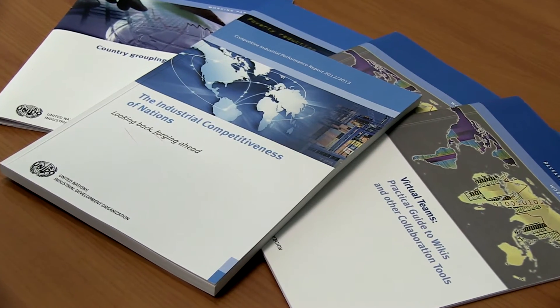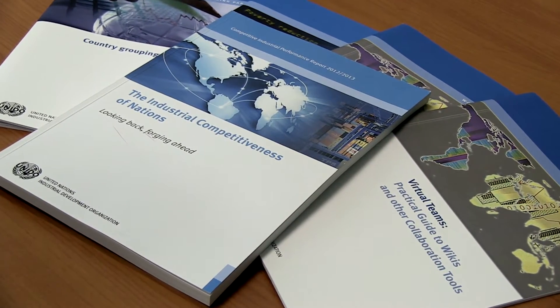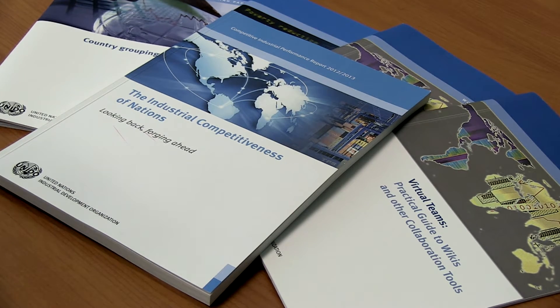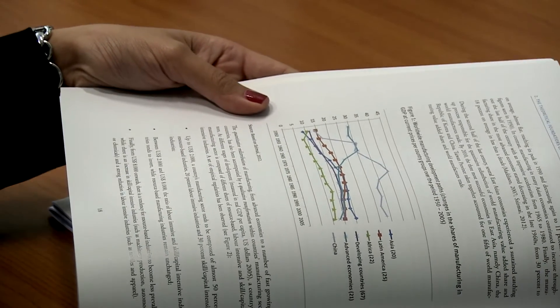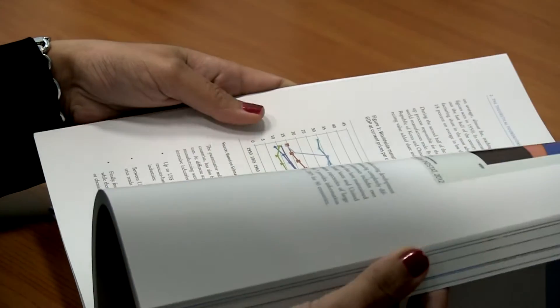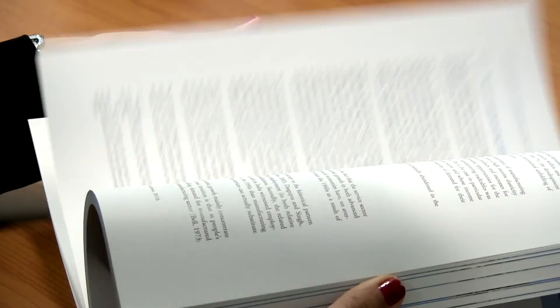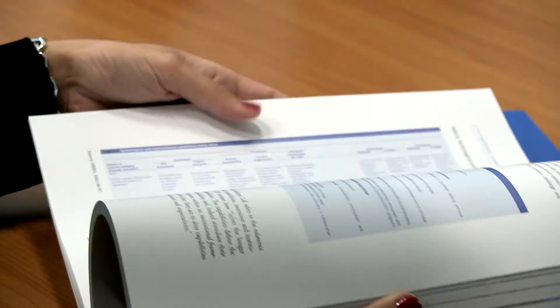UNIDO also publishes a large number of research papers and analytical reports. The Competitive Industrial Performance Index, CIP, is a unique tool for policy-relevant analysis of the manufacturing, production and export capability of an economy. The dissemination of industrial statistics among internal and external users is done through an online portal, which represents current trends in official statistics by providing sophisticated data selection, metadata presentation and graphical visualization.